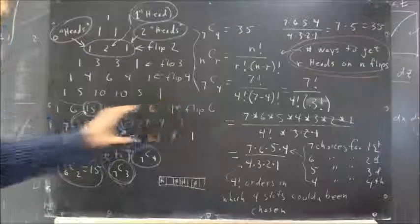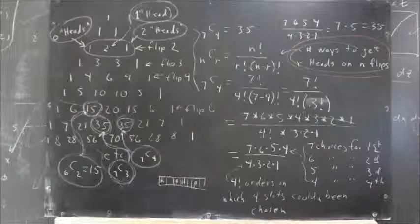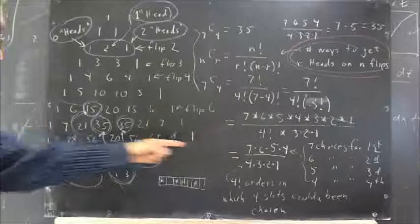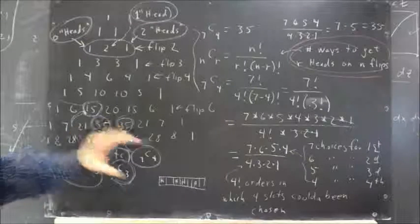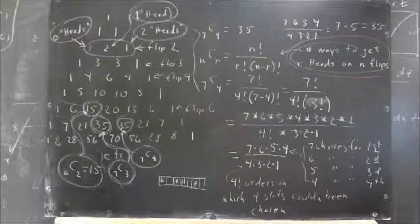So now we understand that Pascal's triangle is giving us a picture. Every row gives us a picture of how many ways there are to get various numbers of heads on the corresponding number of coin flips.